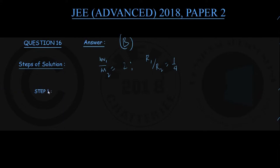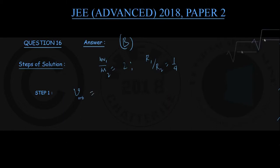In step number 1, we look for the ratio V1 upon V2, where V is the orbital speed of a satellite. From the theory class, the orbital speed of a satellite around a planet is given by the standard formula: V orbital equals square root of G times M divided by R. Here G is the gravitational constant, M is the mass of the planet around which the satellites are revolving — also a constant here — and R is the orbital radius.